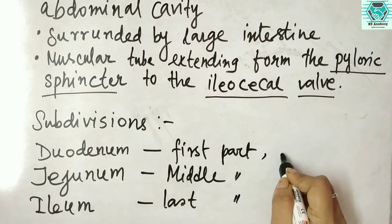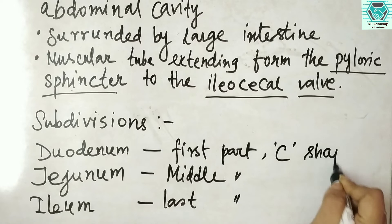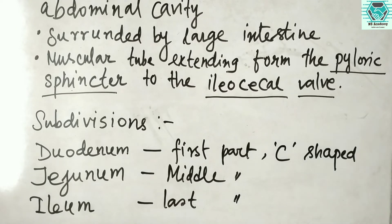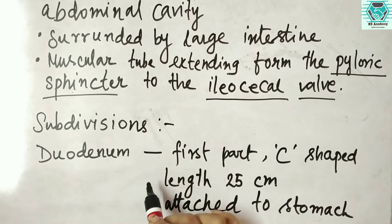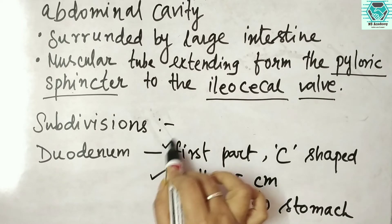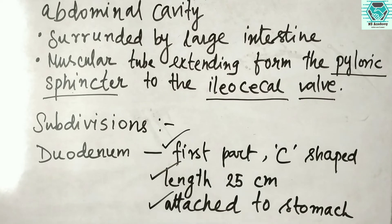The duodenum is C-shaped and is attached to the stomach. In mammals, the duodenum may be the principal site for iron absorption.